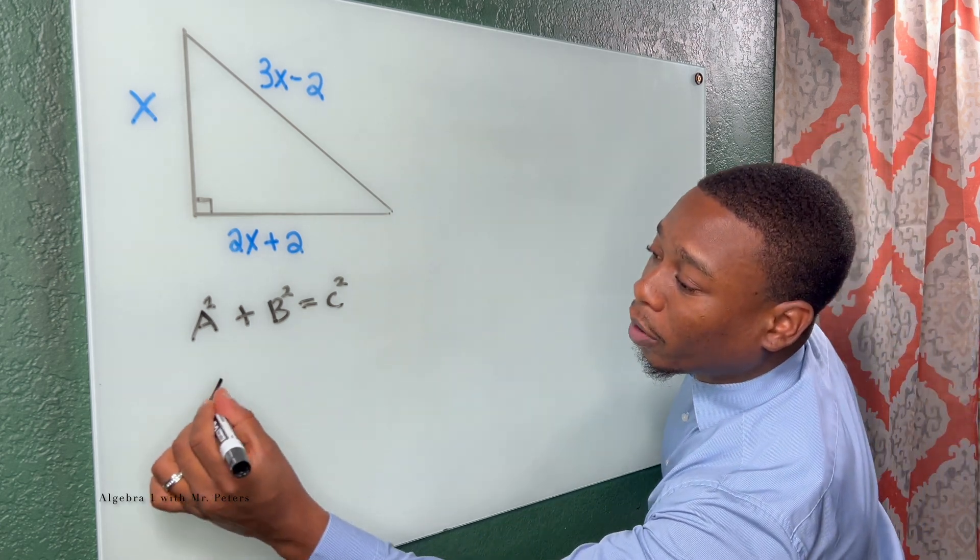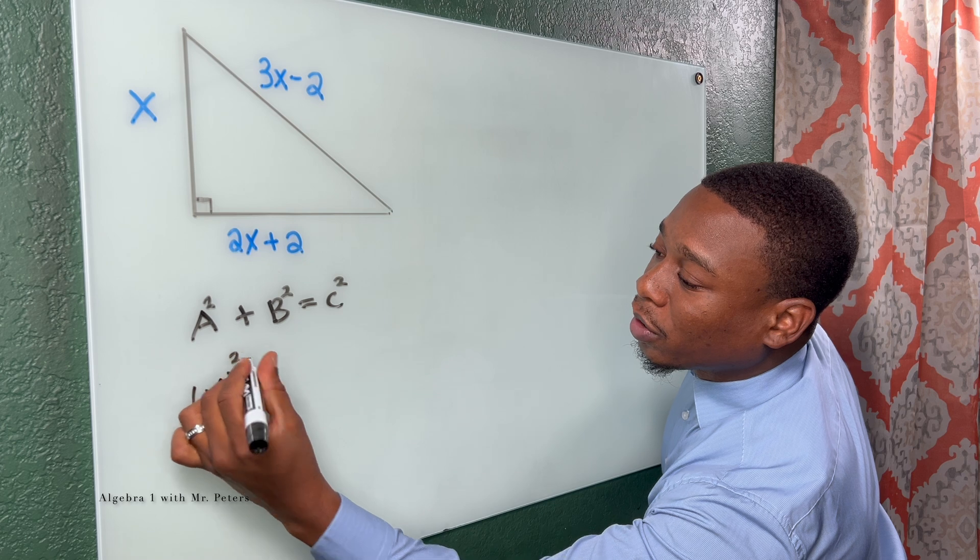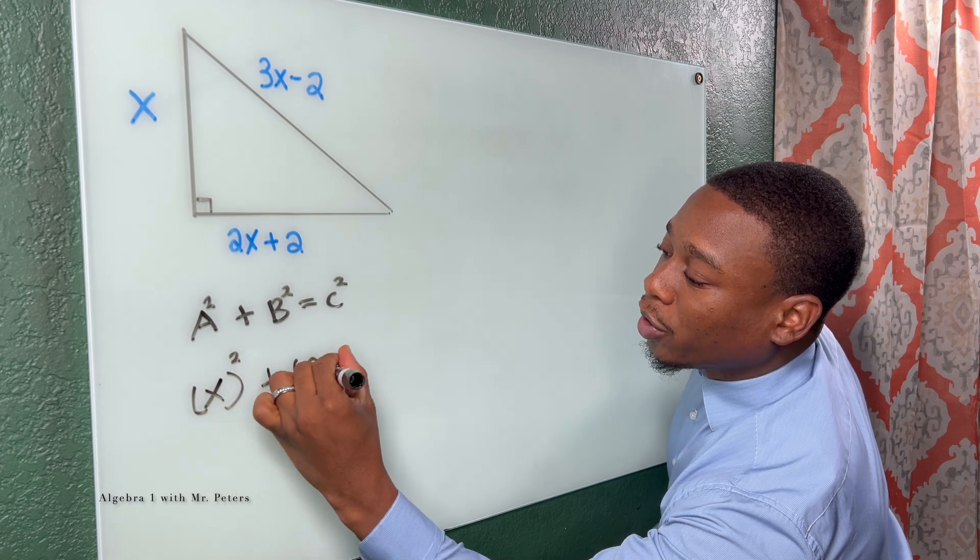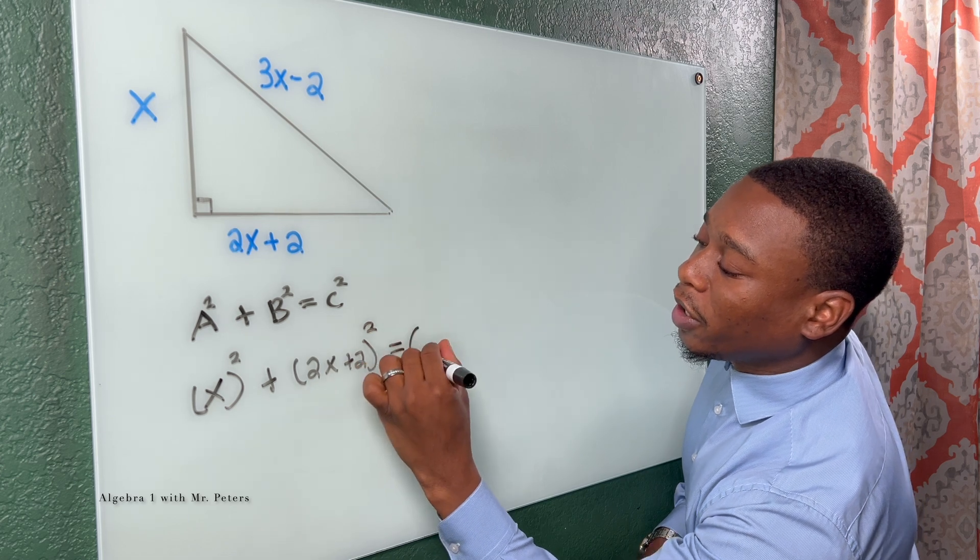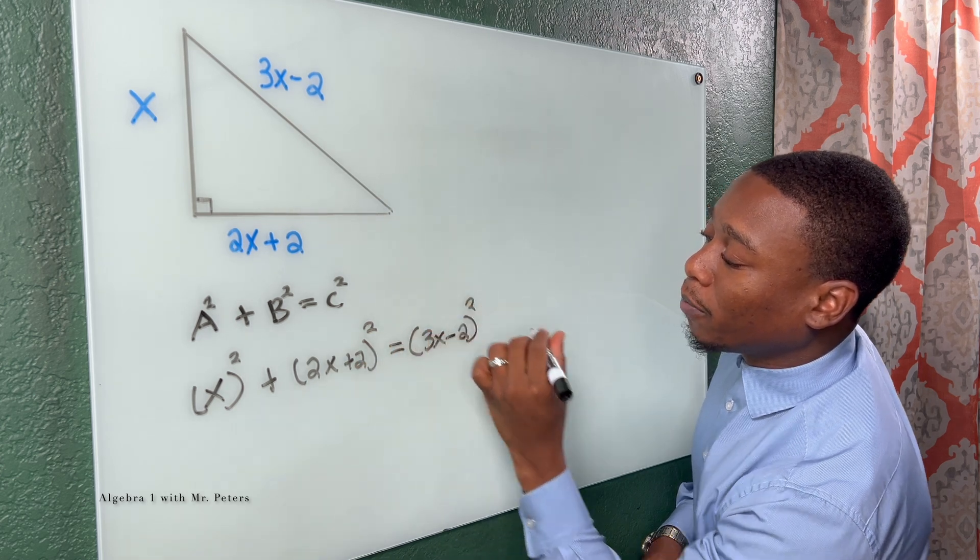So once we go in and we set this up, we have X to the second power plus 2X plus 2 to the second power is equal to 3X minus 2 to the second power.